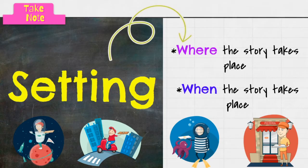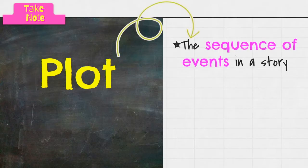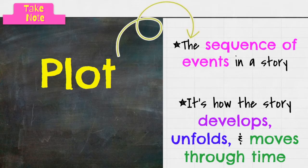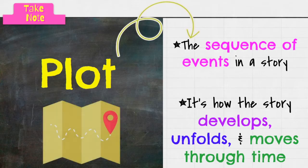Moving on to our next element, we have plot. We could go into detail about this, but we're just going to do a general overview. Plot is the sequence of events in a story and how the story develops, unfolds, and moves through time. A lot of times you have probably seen the plot diagram or a little map that explains what happens: first, second, third, fourth, fifth, or exposition, rising action, climax, falling action, and resolution. Basically, it's a sequence of events, right?